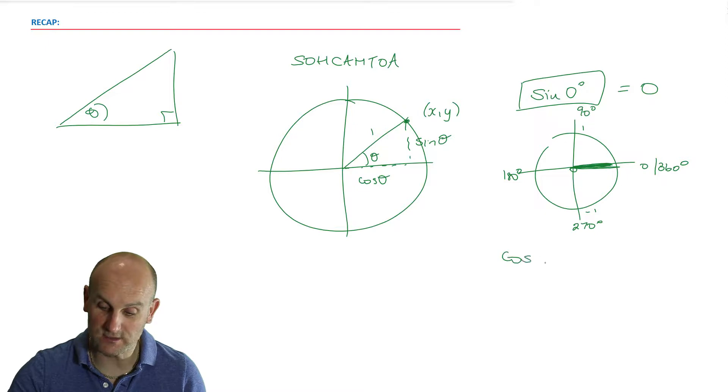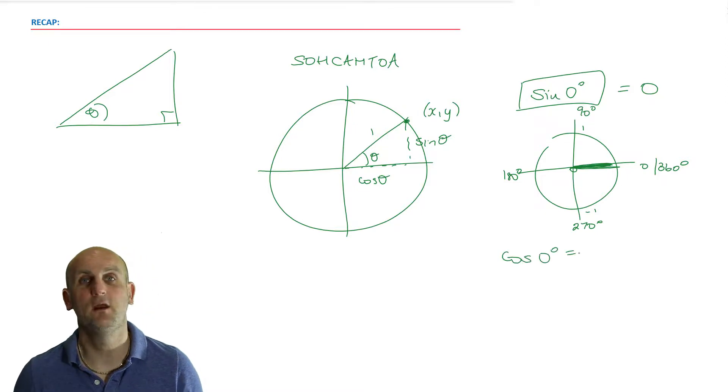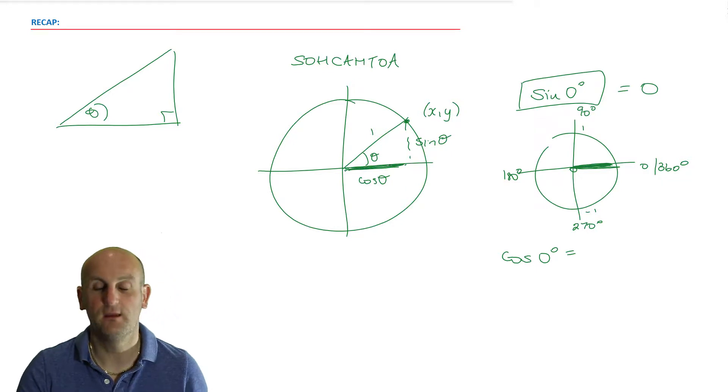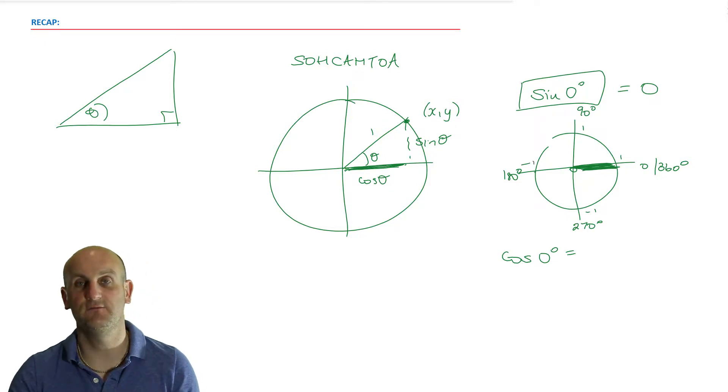So I now know the sine of zero degrees is zero. And in the same way, the cosine of zero degrees is, well, cosine we know is a horizontal distance. How long is that line? Does it have a horizontal length? I should because using my Cartesian information, that has a length of one. So the cosine of zero is one.